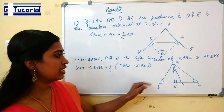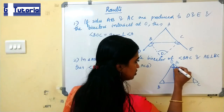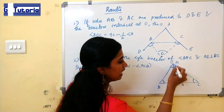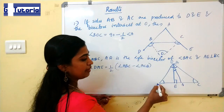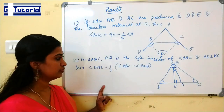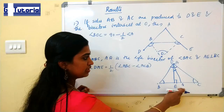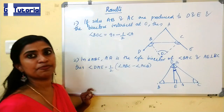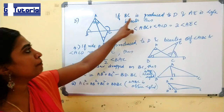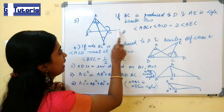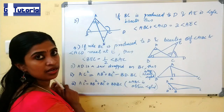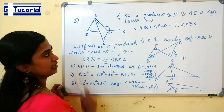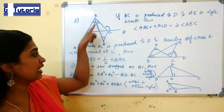Next theorem: in triangle ABC, if AD is the angle bisector of angle A, and AE is the perpendicular from A to line BC, then angle DAE is equal to half of (angle ABC minus angle ACB). That is, when AD is the angle bisector and AE is perpendicular to BC, the angle between them equals half the difference of the other two angles.